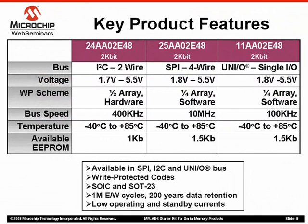Now let's look at Microchip's product offering and quickly glance over the key product features. Microchip's EUI-48-enabled MAC address EEPROMs are available in SPI, I2C, and UNIO bus. These standard well-known protocols will help you get designed in quickly and get to market sooner. They are available in popular SOIC and SOT-23 packages and come with write-protected codes as explained previously. These 2k-bit devices come with standard EEPROM features including at least 1 million cycles of endurance, 200 years data retention, and low operating and standby currents.